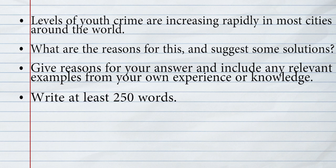Then the question is shown here. We need to understand what the question is asking. The topic is levels of youth crime — we need to talk about that. Youth crime is increasing, so we need to look at the reasons why youth crime is increasing, and then suggest solutions. We need to discuss the causes and also how to reduce youth crime.